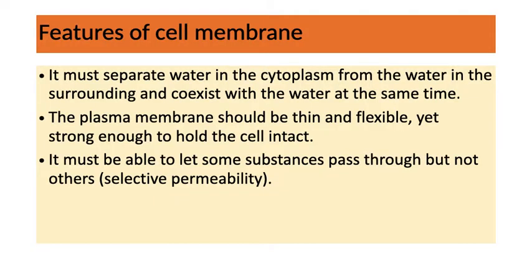The features of the cell membrane that must be fulfilled are: first, it must separate water in the cytoplasm from water in the surrounding, yet coexist with water at the same time. Second, the plasma membrane must be thin and flexible, yet strong enough to hold the cell intact. Third, the membrane must allow some substances to pass through but not others — this is called selective permeability.